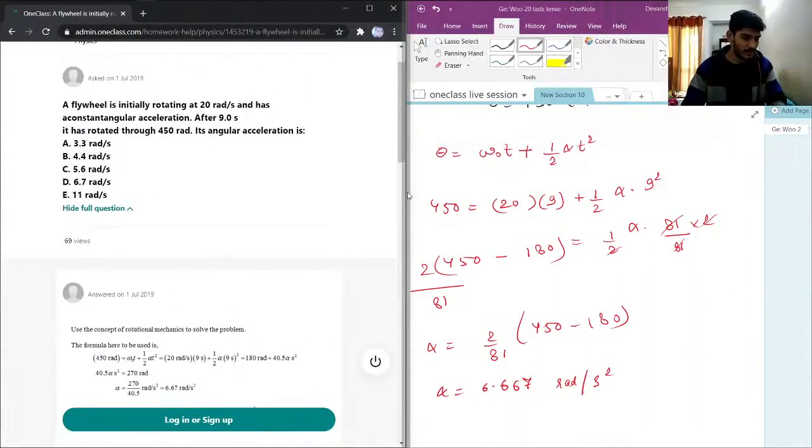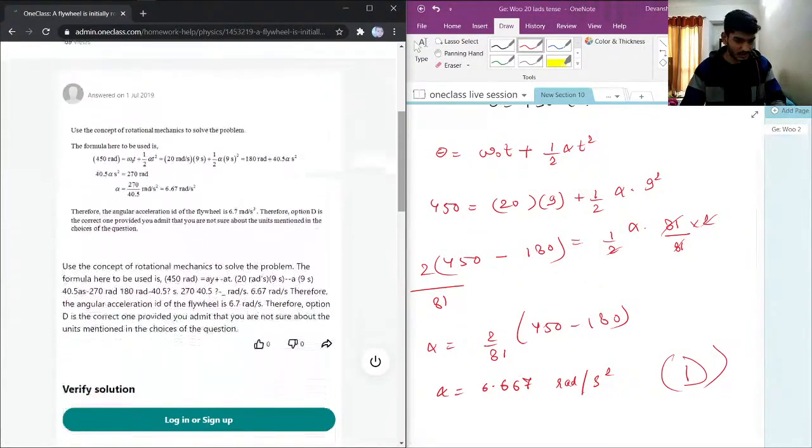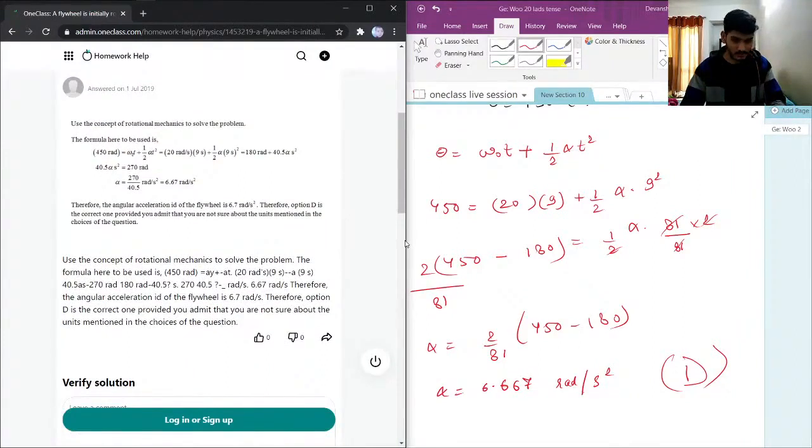Now in the options we can see that the unit of acceleration is not correct, but it can be a printing mistake from the question side. Here we can see option B which is 6.7, and 6.66 we can round to 6.7. Therefore the answer is option D. The answer provided by the computer is the same one. Therefore the angular acceleration of the flywheel is 6.7 radians per second squared.